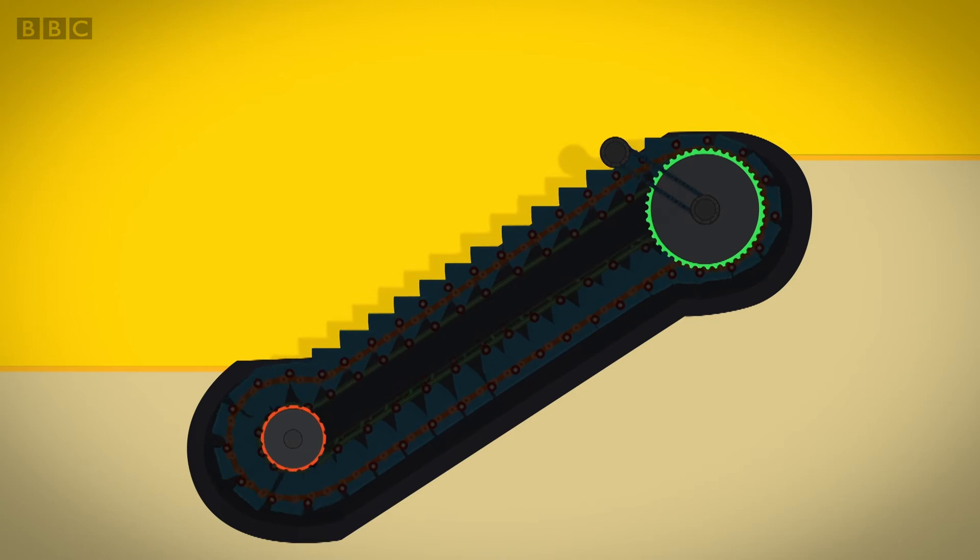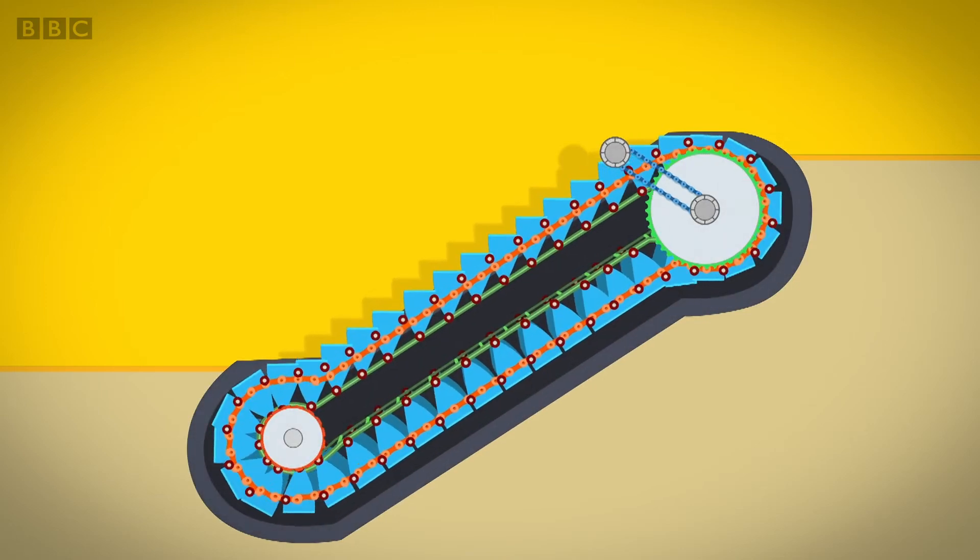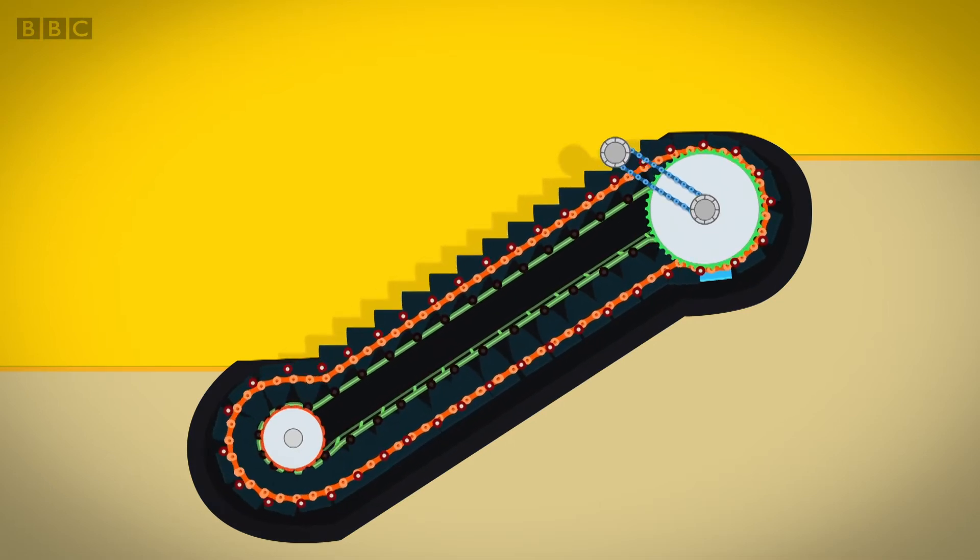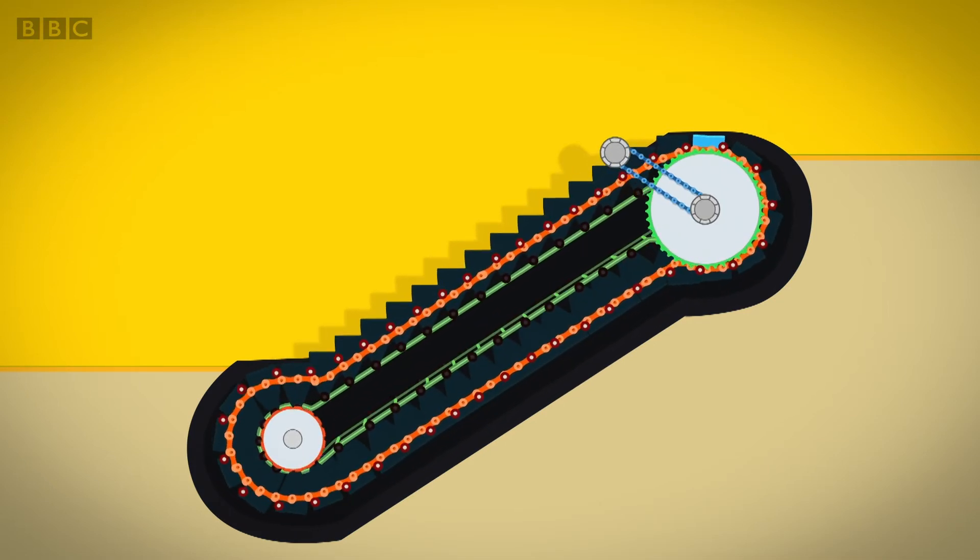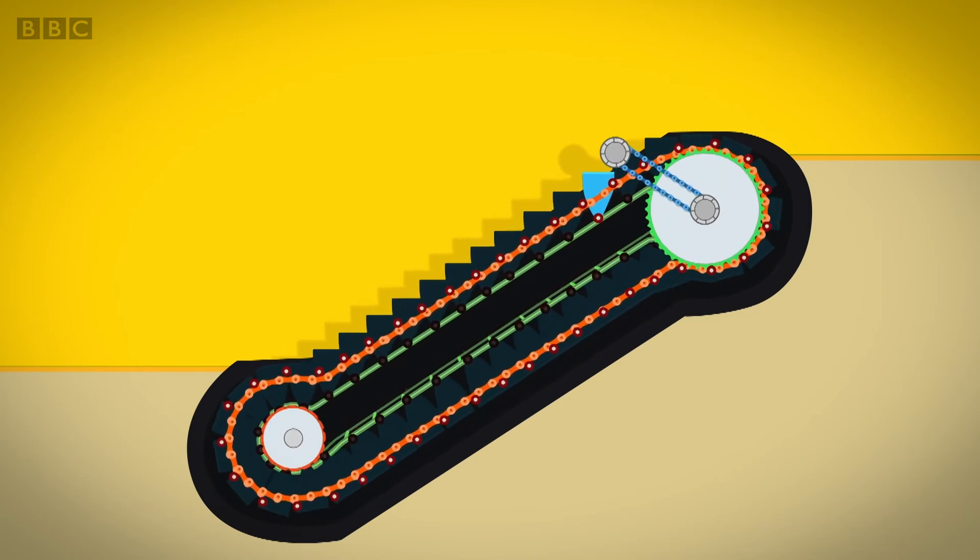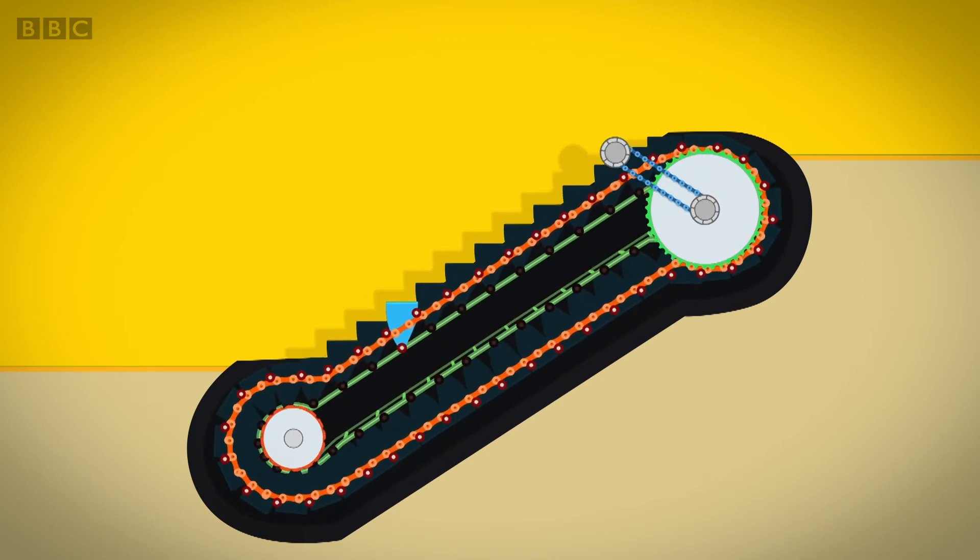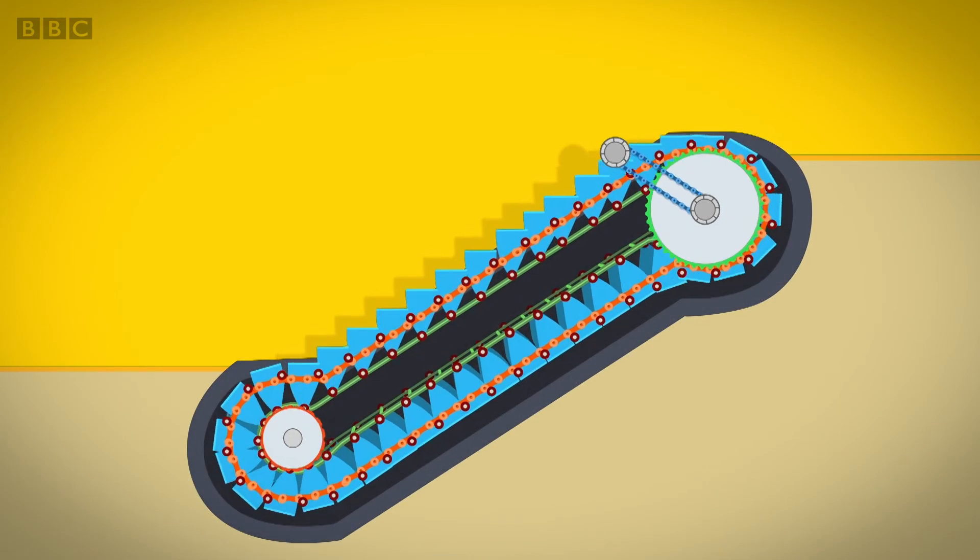Each step has small wheels on it. When a step reaches the top, the chain pulls the wheels around the gear until the step is flat again. It stays flat until it gets all the way back to the bottom, ready to go round again.